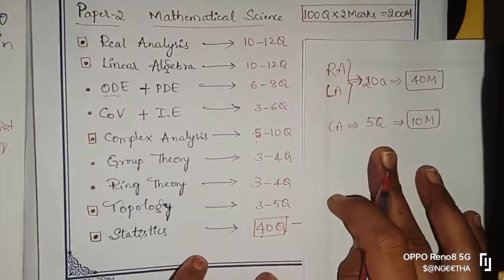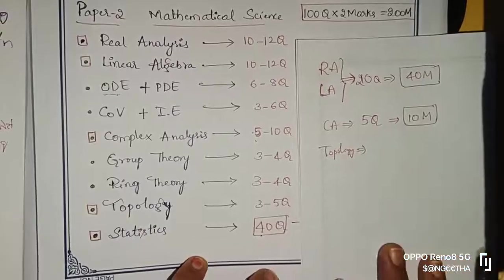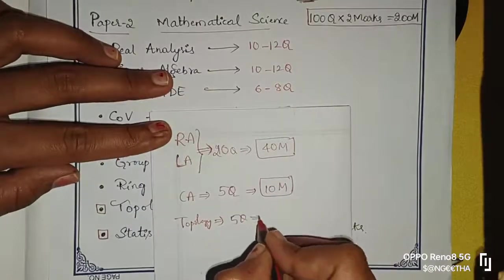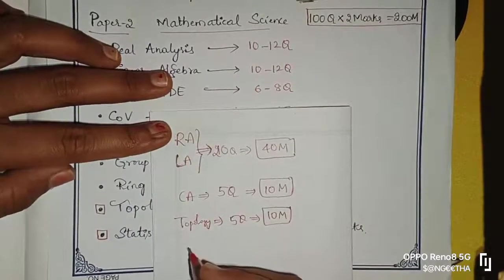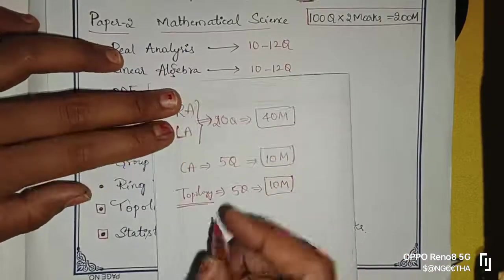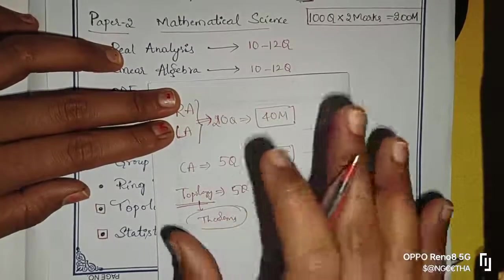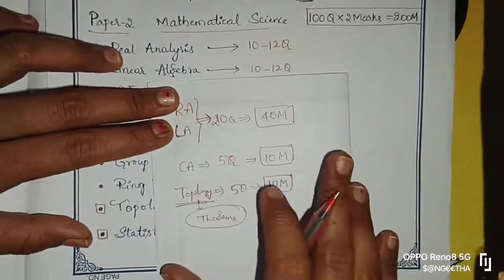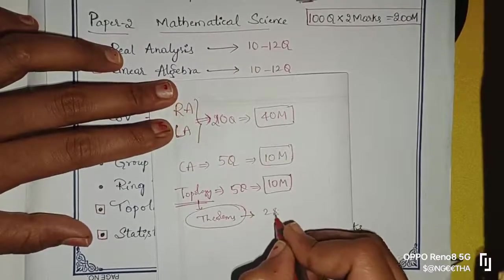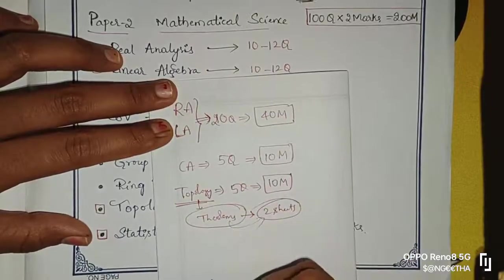Next is topology. Topology is difficult - it is highly imaginary type. But in topology, there are 5 questions worth 10 marks. I know topology is difficult, but what about topology? There are maximum theorems. All theorems can fit on one A4 sheet of paper - it is very easy. You can complete all theorem results in two sheets.